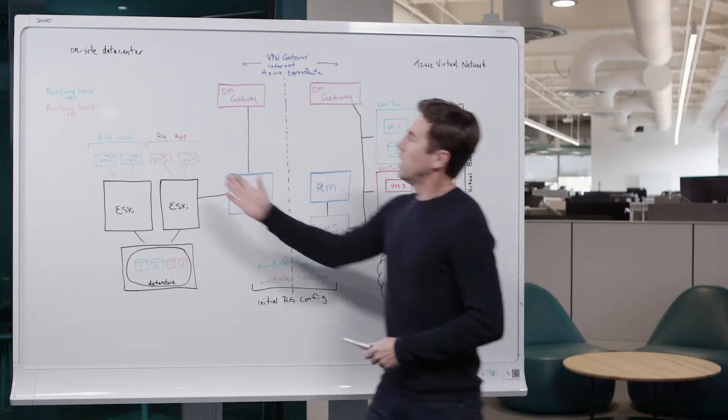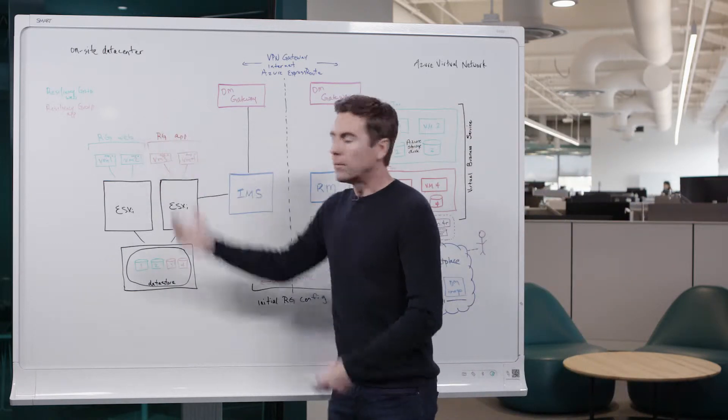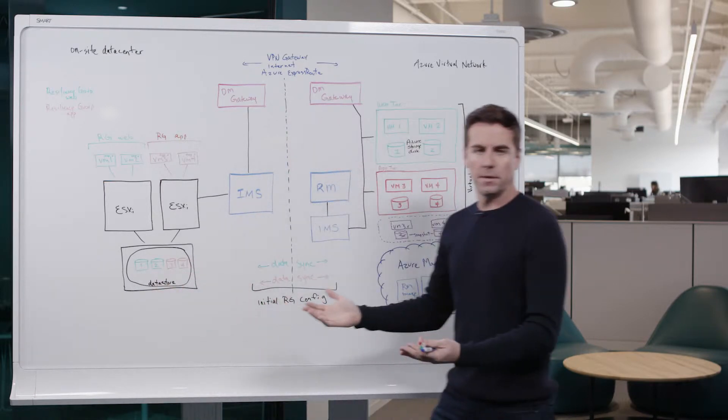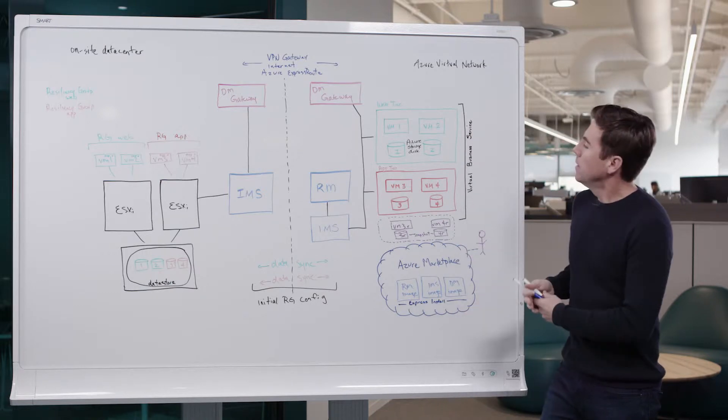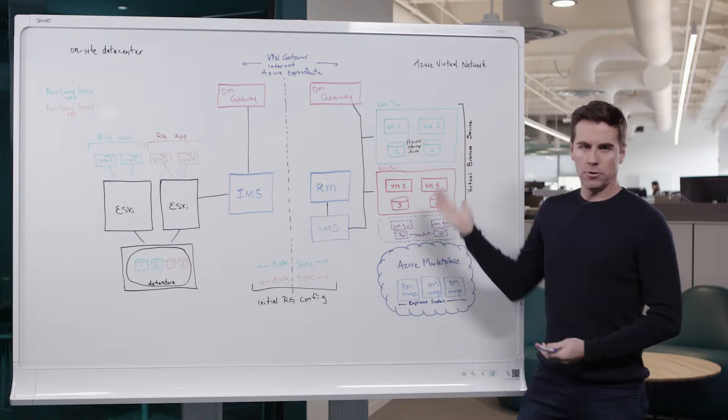So first to note, we have here an on-site data center. This is a traditional VMware configuration on-site. And over here, we have the Azure cloud, and we have infrastructure configured within an Azure virtual network.